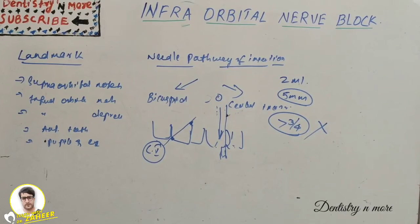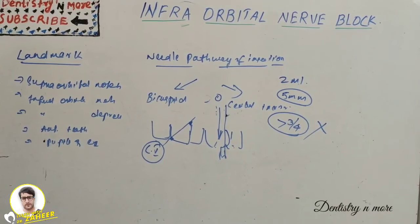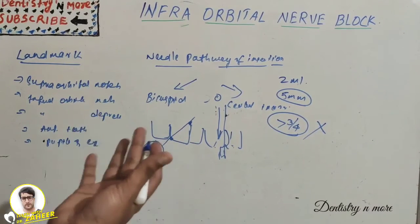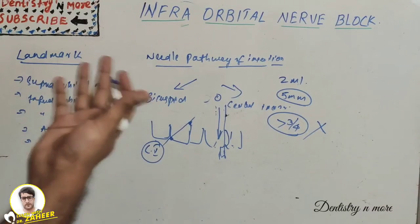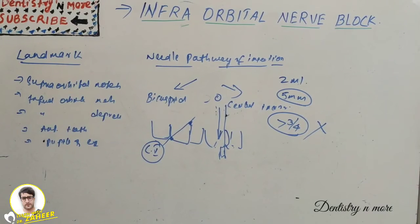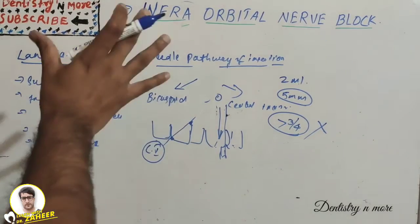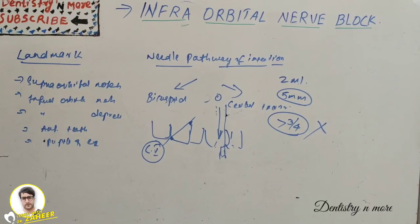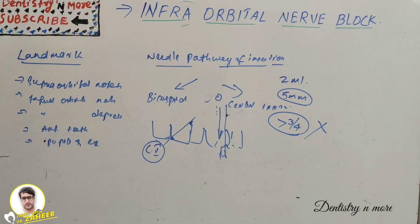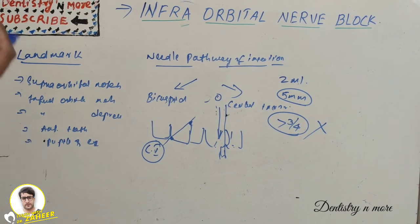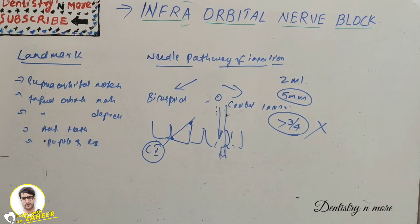Indications for the infraorbital nerve block include dental procedures involving more than two maxillary teeth and buccal tissue — central incisors, canine, premolars — and any inflammation or infection procedures. It is also indicated when supraperiosteal injections have been ineffective due to dense cortical bone. Contraindications include cases where only a supraperiosteal injection is needed or where a localized indication allows for infiltration instead.